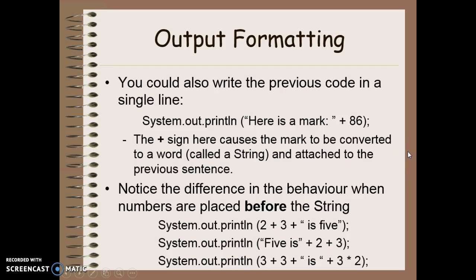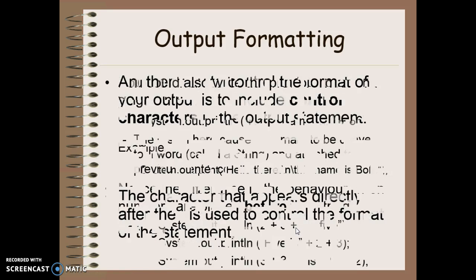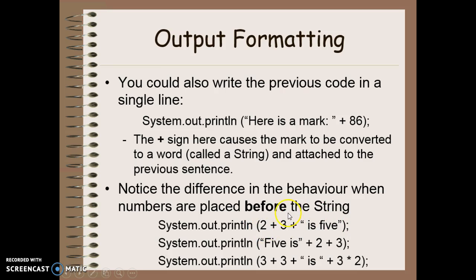Notice the difference in behavior when numbers are placed before the string versus after the string. So if I was to say 2 plus 3 is 5, this is actually going to output the number 5 is 5 so it does the math for you. If I said 5 is 2 plus 3, it will print these as individual strings so it will say 5 is 2 3. And if I did this one here, 3 plus 3, because it comes first it would show the number 6, so it would do the math, is, and now I'm going to concatenate and I'm actually going to do math because this is not a plus sign, it's another mathematical operator called multiplication. It's going to multiply that out and say 6 so it would be 6 is 6.